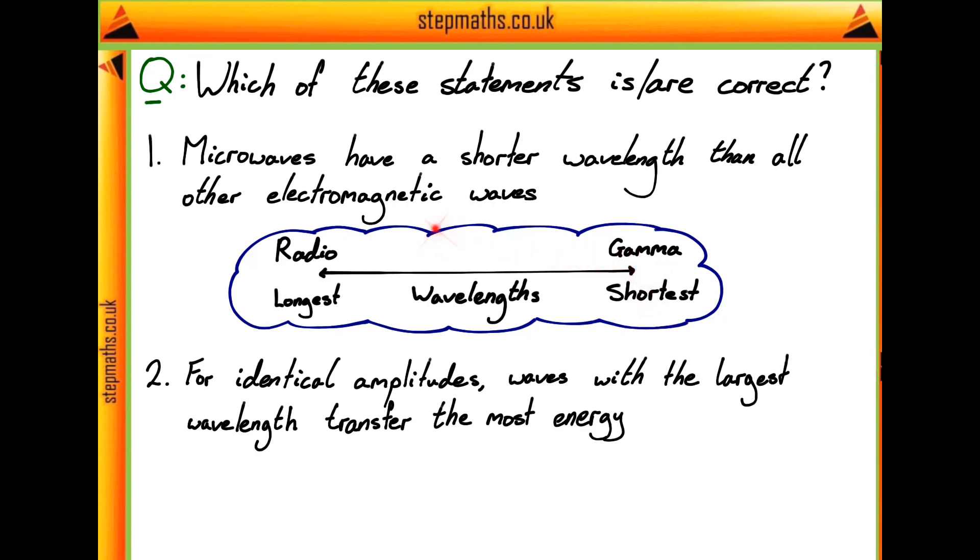Now straight away this tells us that microwaves do not have the shortest wavelength because we know that gamma has the shortest, with microwaves being somewhere in here. So this statement is going to be a false one.